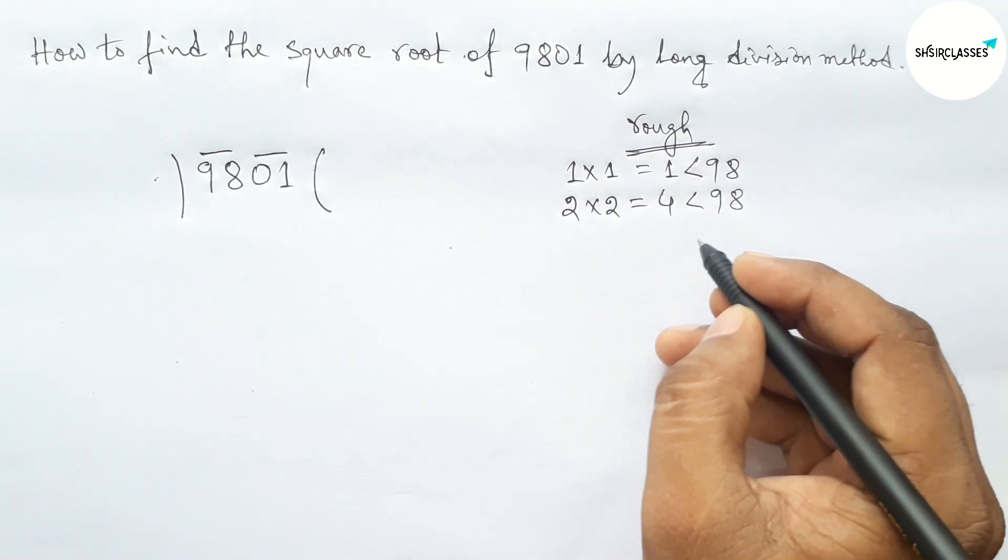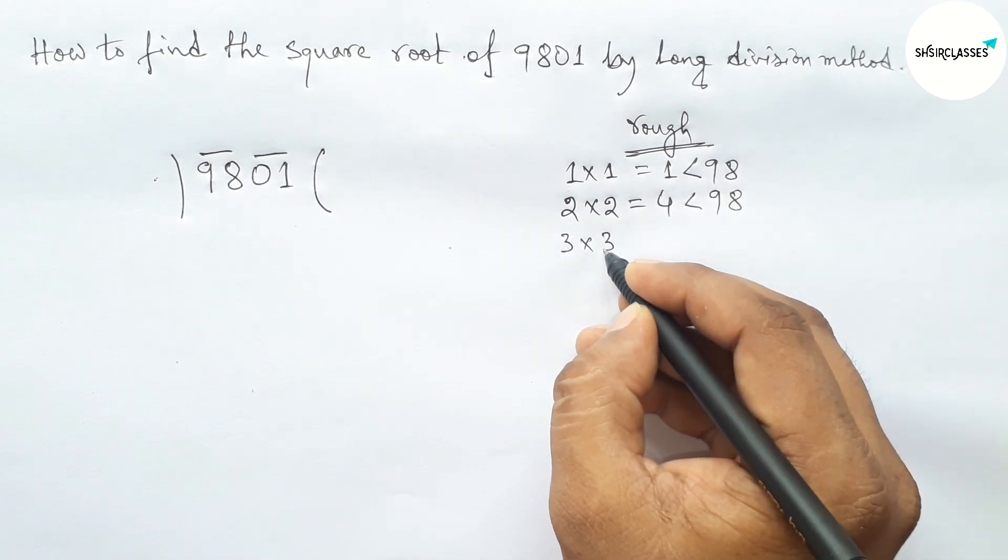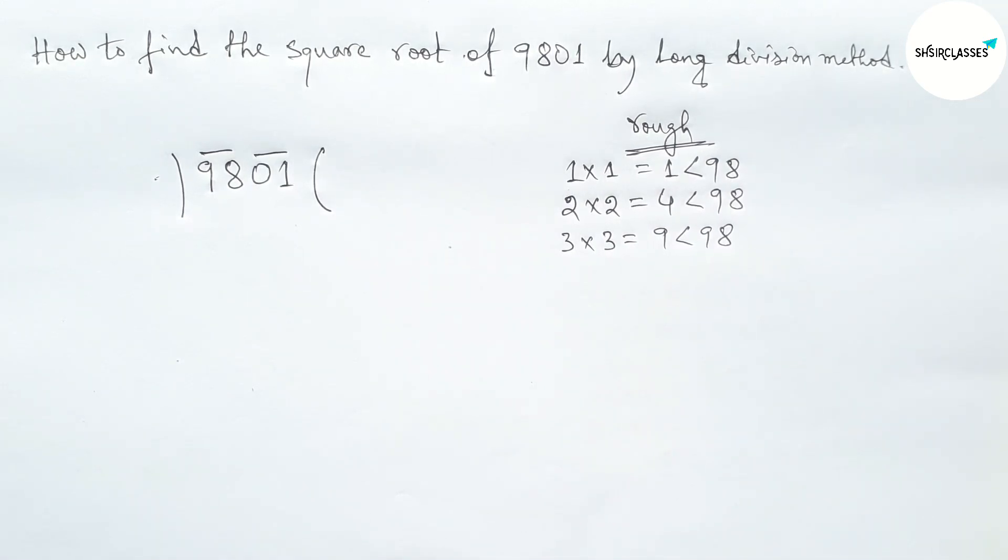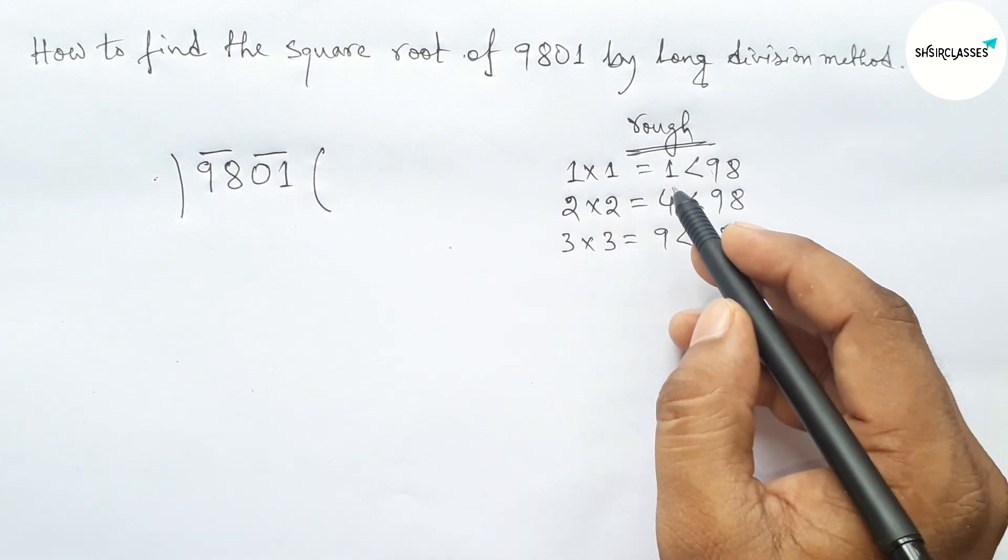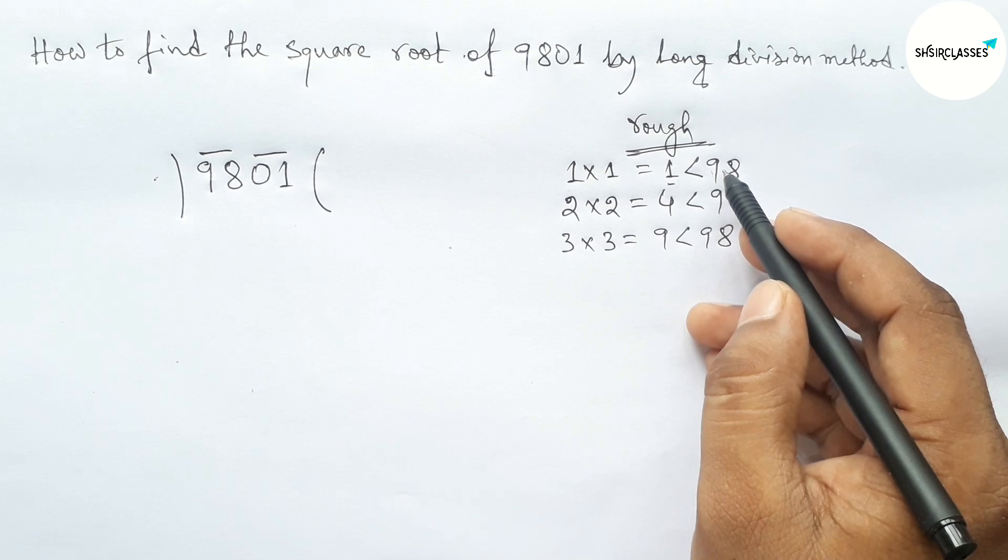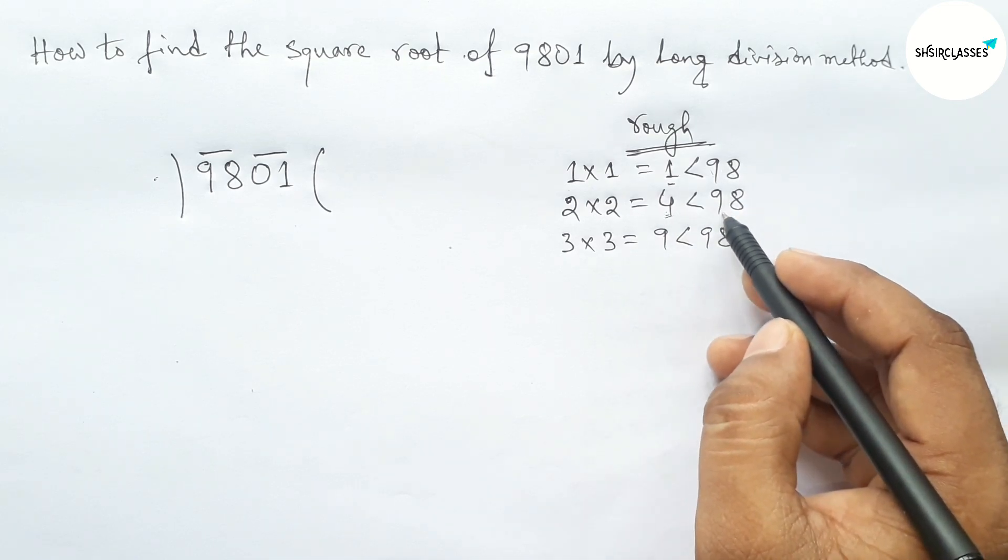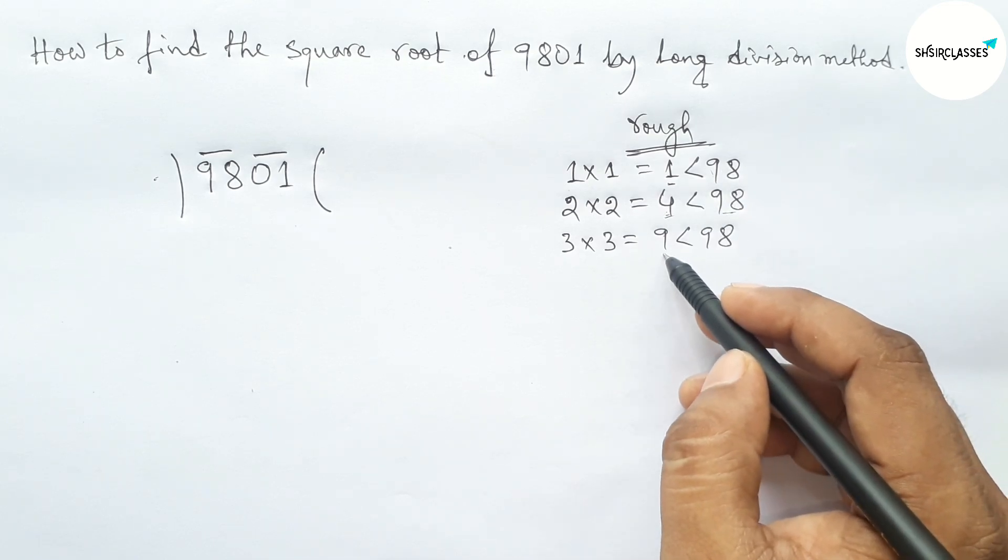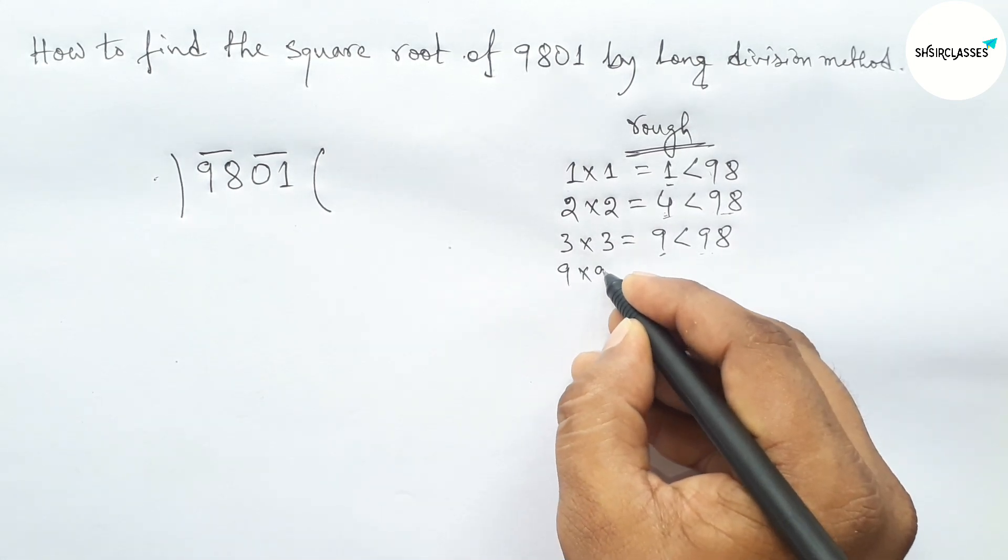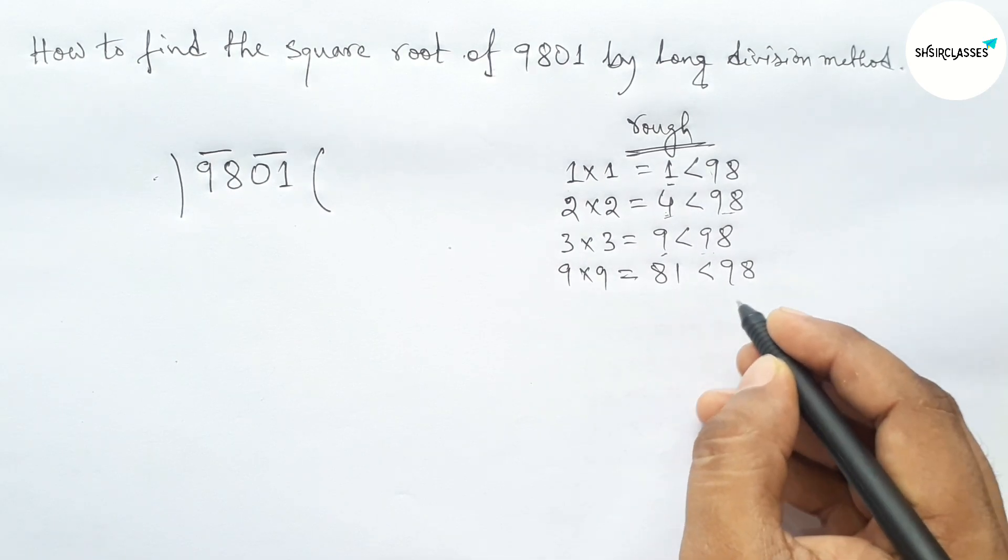Taking 3 and multiplying by 3, so 9, which is less than 98. But here all these cases we can see that all the numbers are less than 98 but not more closer to 98. So here 9 also not more closer to 98. Now directly taking here 9 and multiplying by 9, so 81.